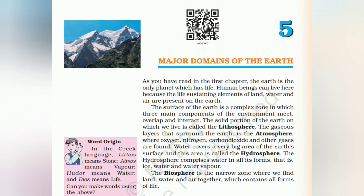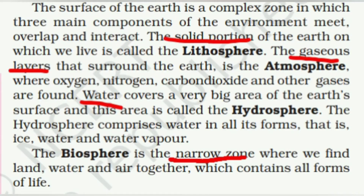Chapter 5 is 'Major Domains of the Earth.' The whole chapter describes the lithosphere, atmosphere, hydrosphere, and biosphere. Lithosphere is the solid part — rocks, crust, soil with nutrients, and also includes continents. Hydrosphere is water. Atmosphere is air. Biosphere is the combination of all three. The chapter also includes the five major oceans and seven continents with small descriptions about where they are and how they are differentiated.